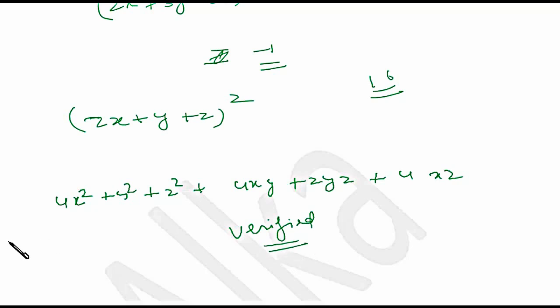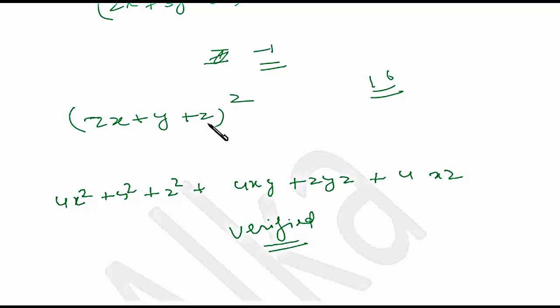So whenever a question asks for the sum of coefficients, just put the value of all variables as 1 and evaluate the expression. I hope you are clear with this logic.